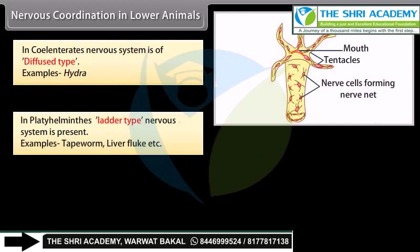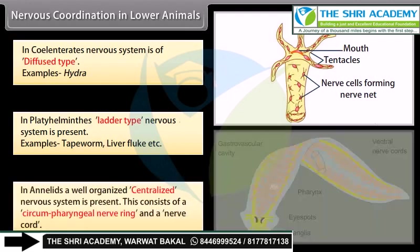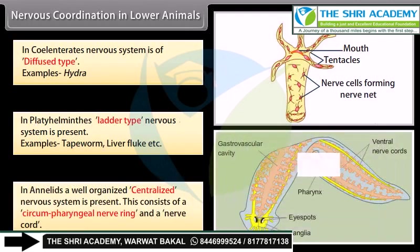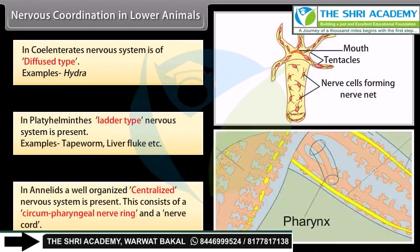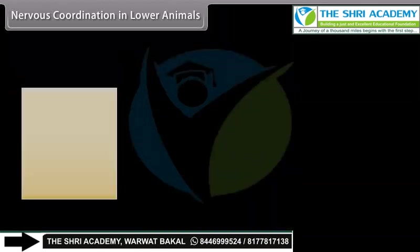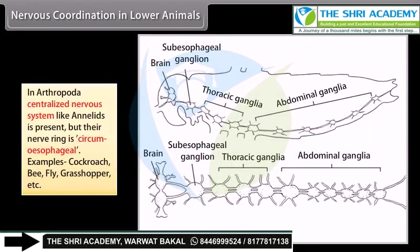In annelids, a well-organized centralized nervous system is present. This consists of a circumpharyngeal nerve ring and a nerve cord. In arthropoda, a centralized nervous system similar to annelids is present, but their nerve ring is circumesophageal.